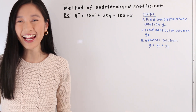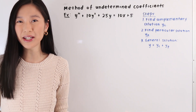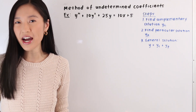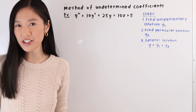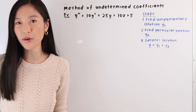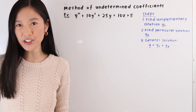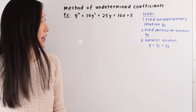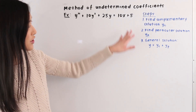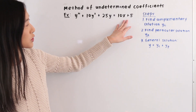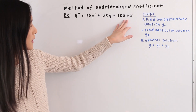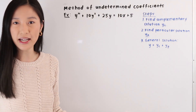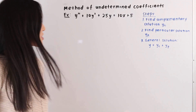Hi everyone, it's Janine here and in today's video we are going to be learning how to use the method of undetermined coefficients to solve a second order non-homogeneous linear differential equation when the right hand side of our differential equation is equal to a polynomial. So let's go ahead and take a look at this example here.